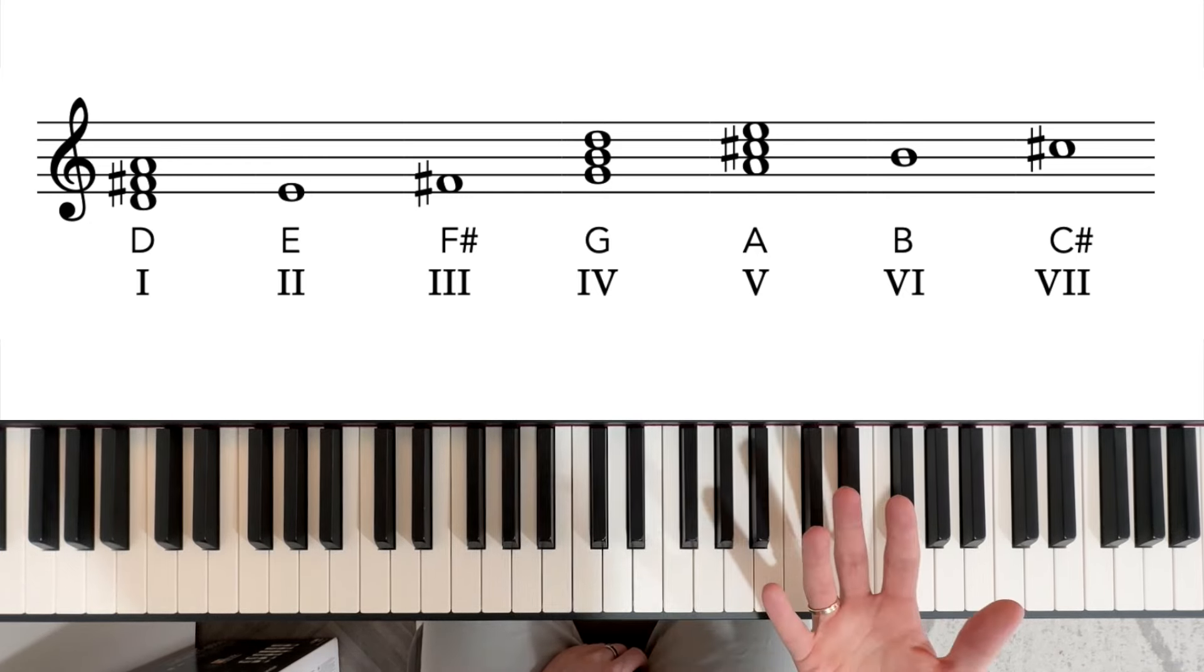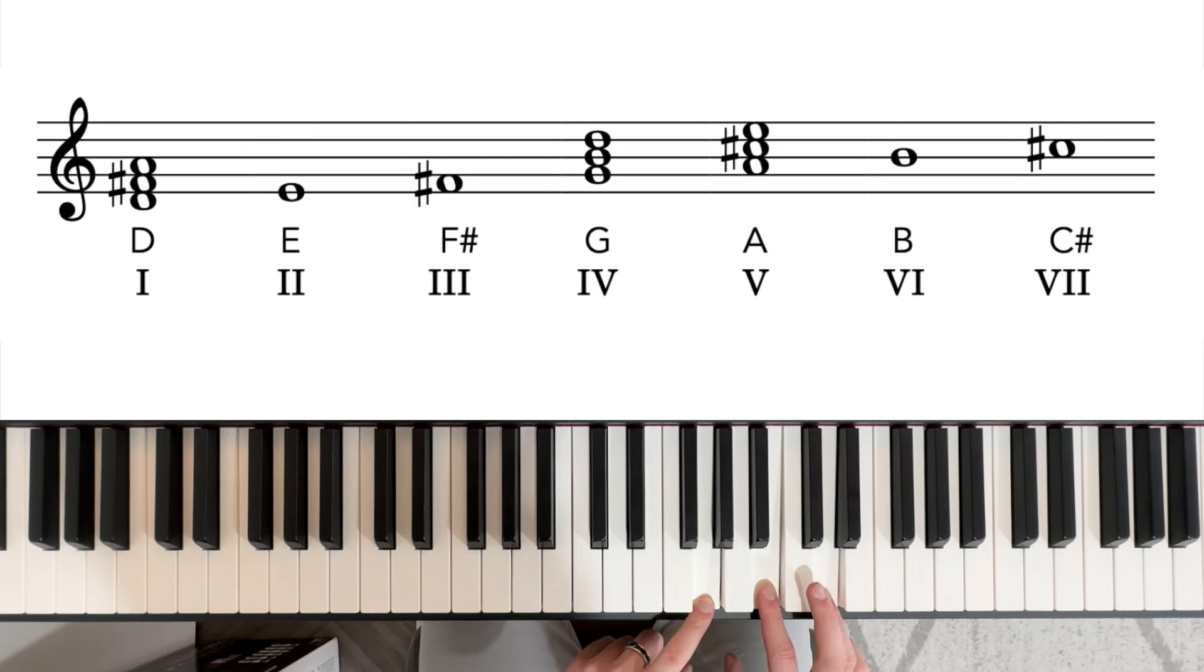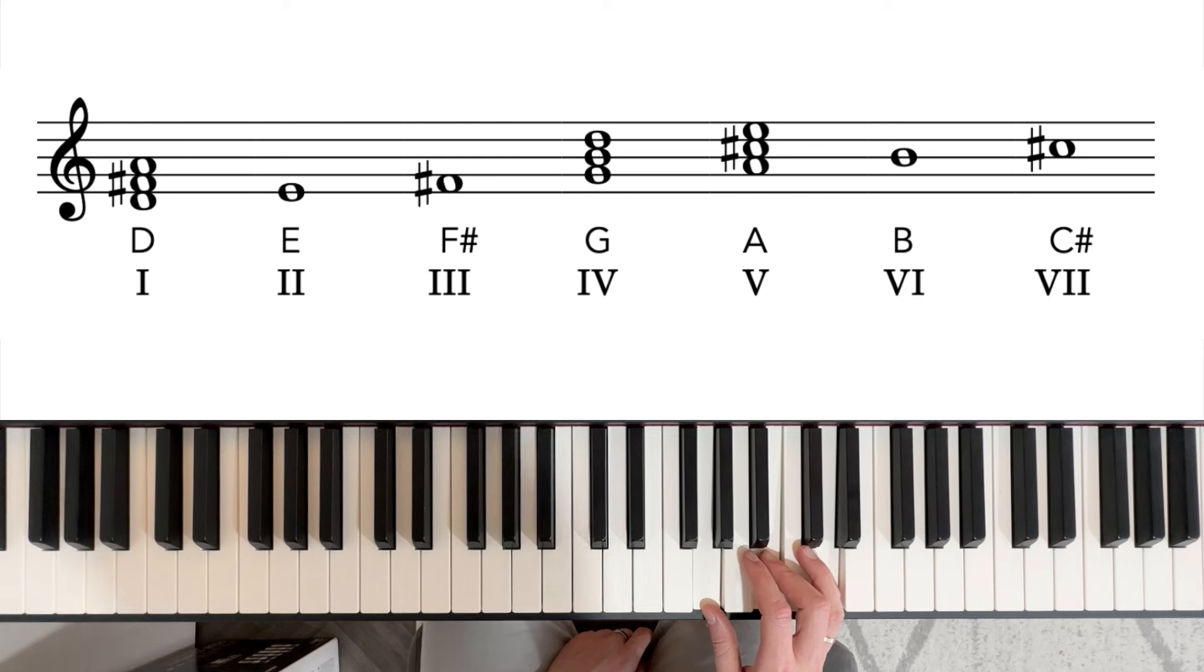The fourth chord is going to start on the fourth note. So one, two, three, four is going to start on G and is going to be a G major chord. So one, two, three, four, five. We always need the first, the third and the fifth in order. So this is chord four, G major.